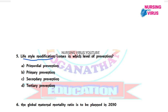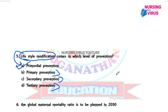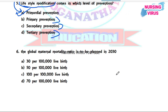Question 5: Lifestyle modification comes under which level of prevention? Lifestyle modification always falls under primordial prevention. Primary, secondary, and tertiary prevention focus on health education, screening, and rehabilitation services respectively. Lifestyle modification is specifically placed under primordial prevention.